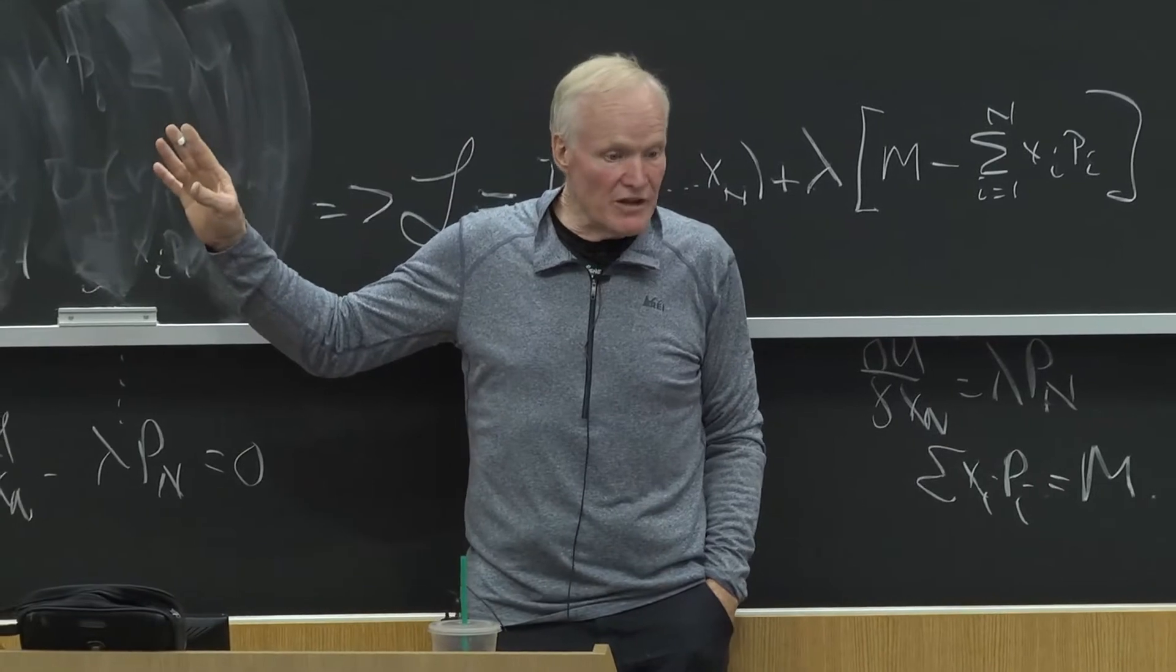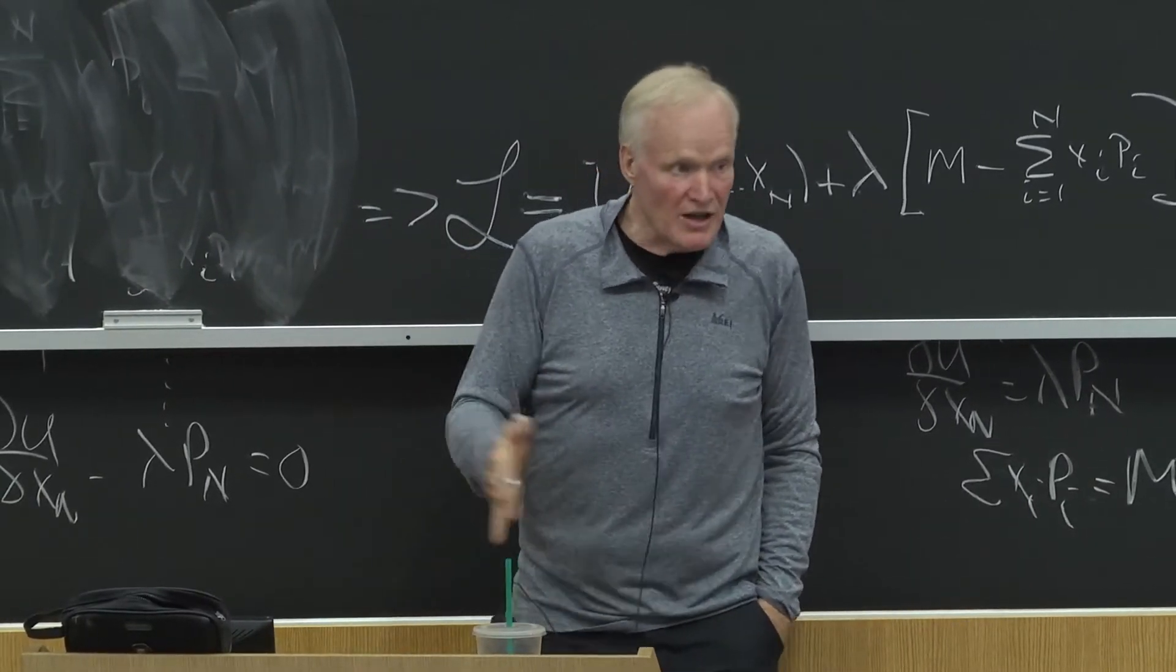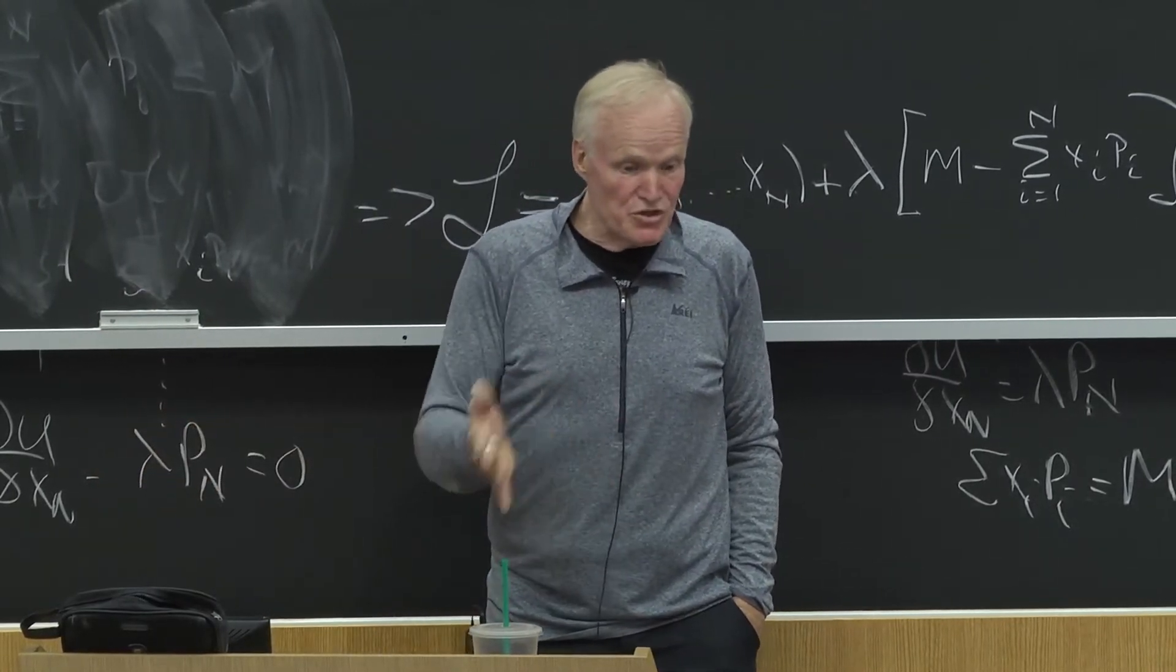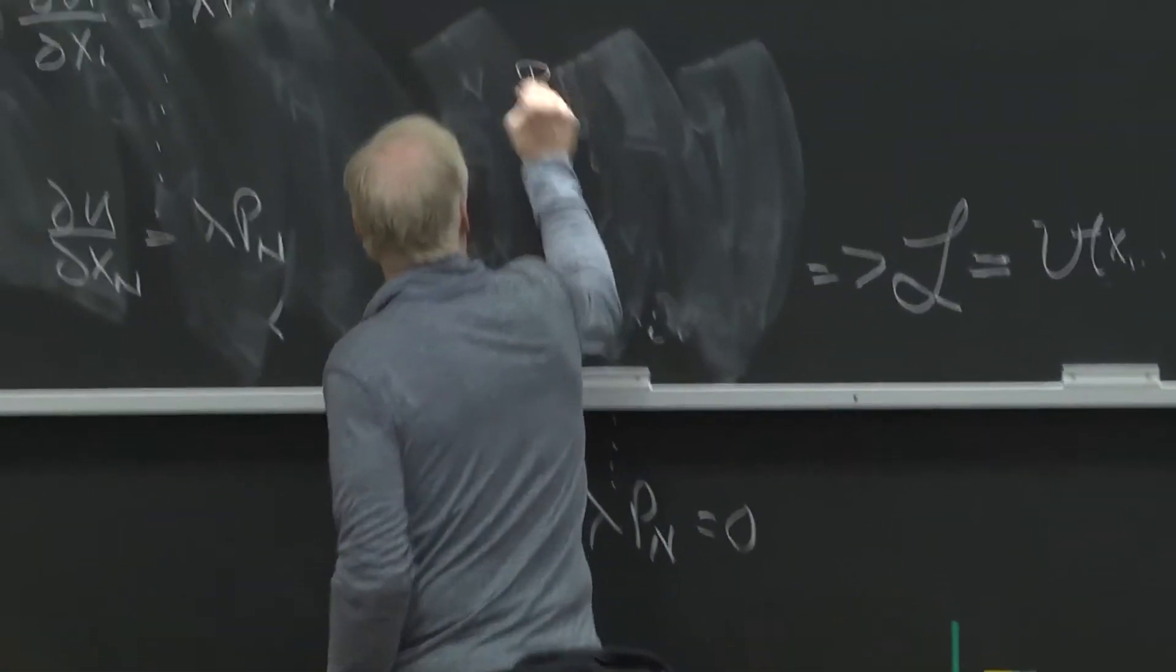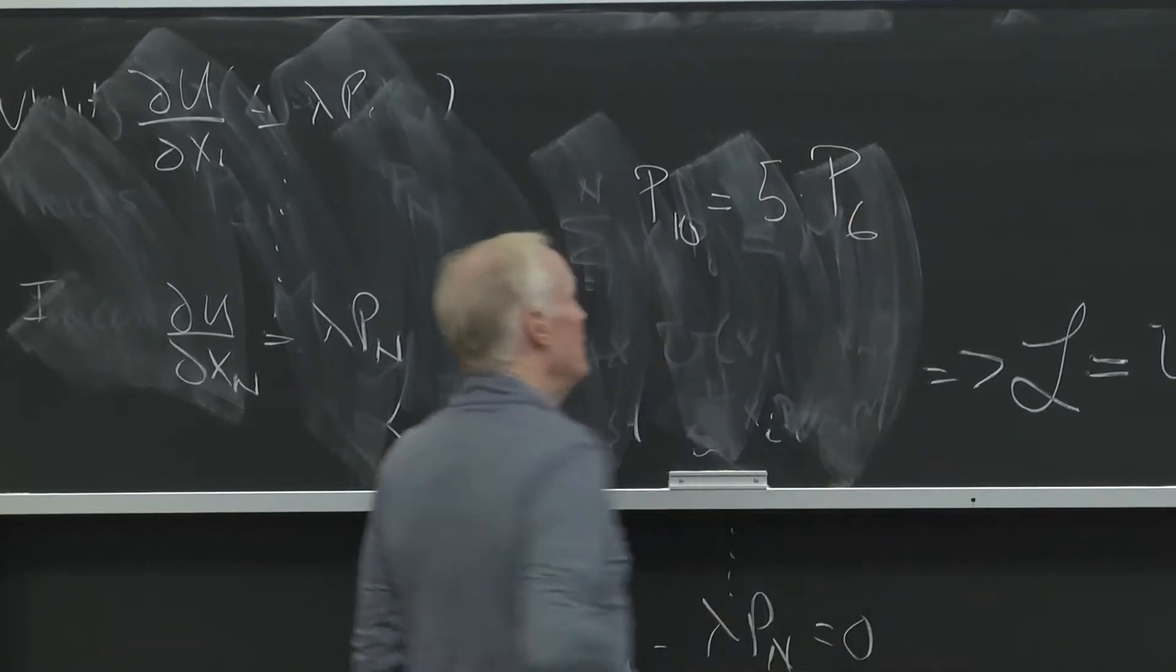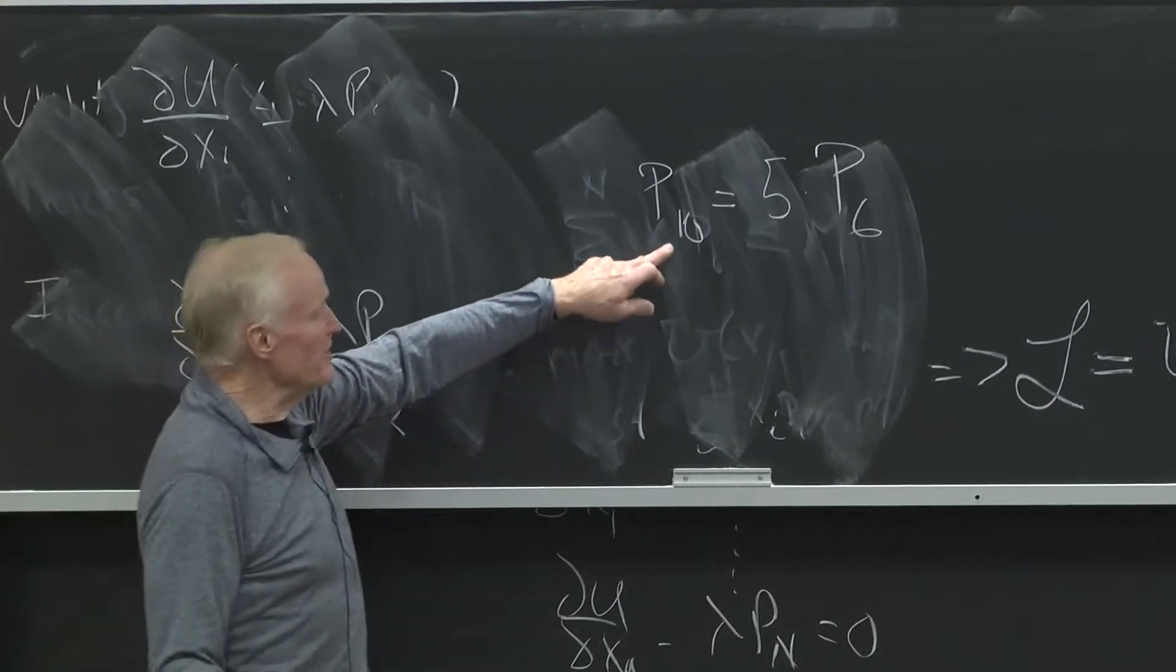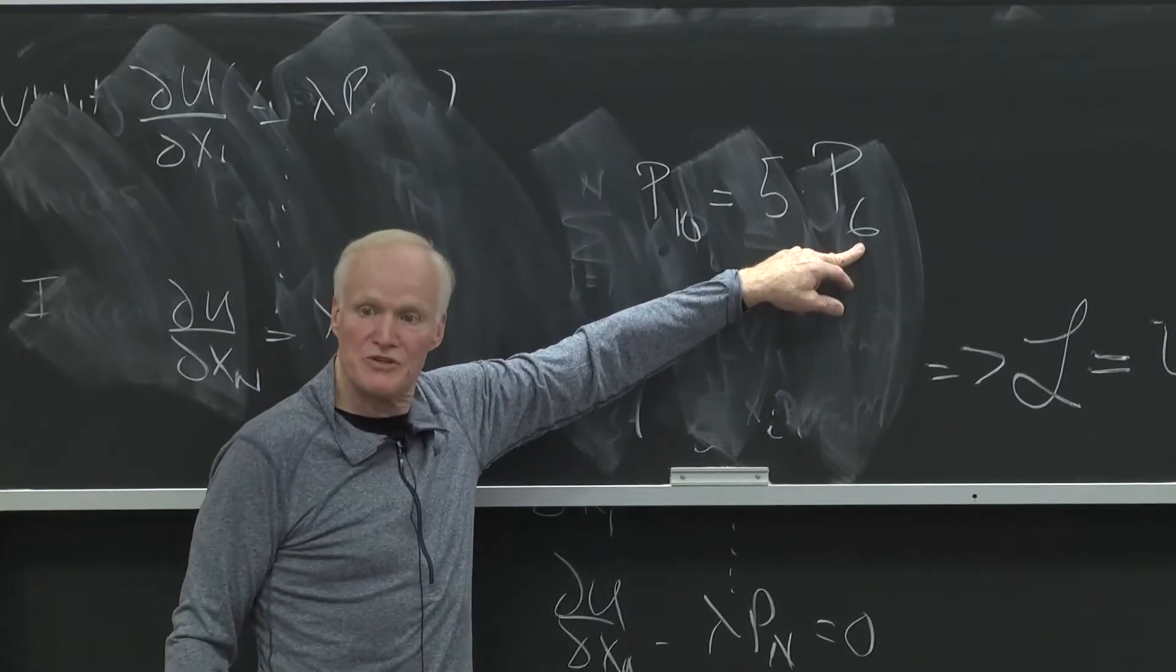That prices are very revealing about people's values precisely because people are optimizing. It tells us that when one good costs five times what another good is, that to the individuals consuming that good, let's say price of good ten equals five times the price of good six.